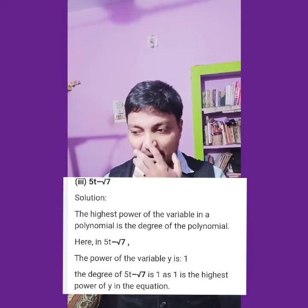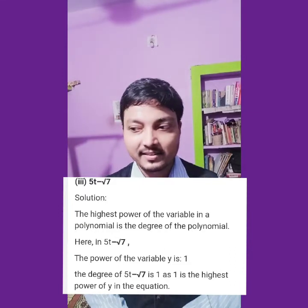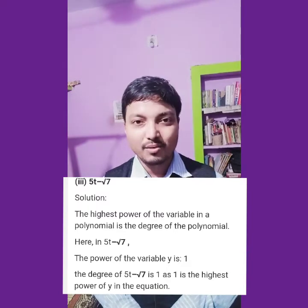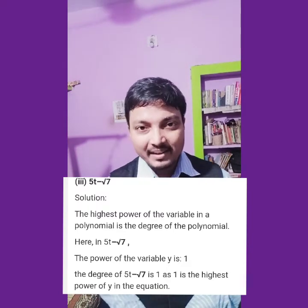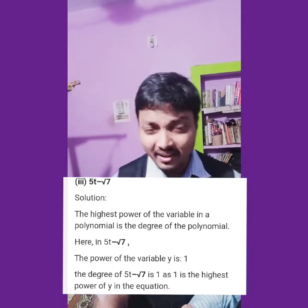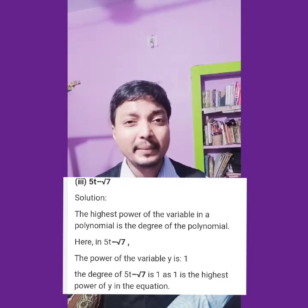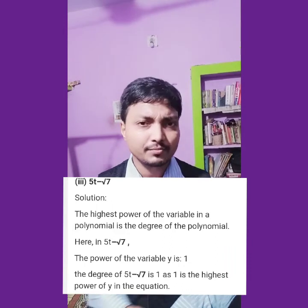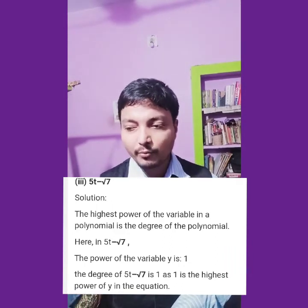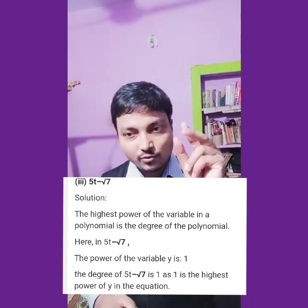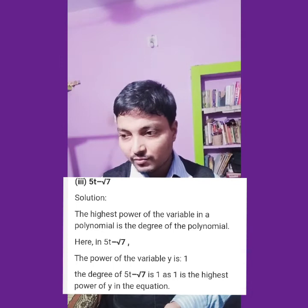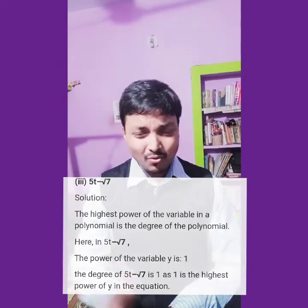Next one is 5t minus root over 7. It also has two terms: 5t has power 1, and root over 7 is a constant with power 0. The greater power is 1. So the degree of this polynomial is 1.